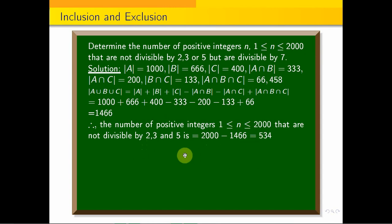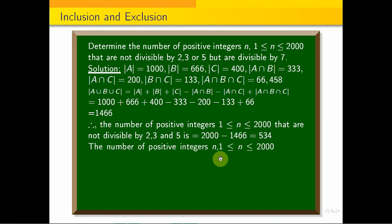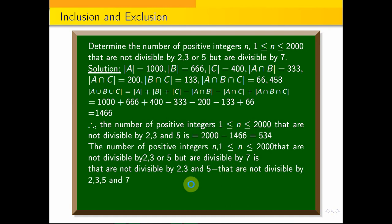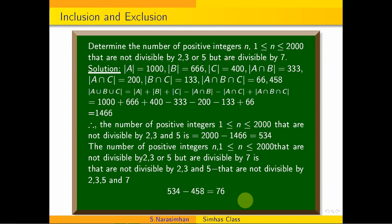But we want numbers not divisible by 2, 3, 5 and divisible by 7. So the answer is: not divisible by 2, 3, 5 minus not divisible by 2, 3, 5, and 7, which equals 534 minus 458 = 76. This is the answer to this problem. Subscribe and watch this channel. Thank you for watching.